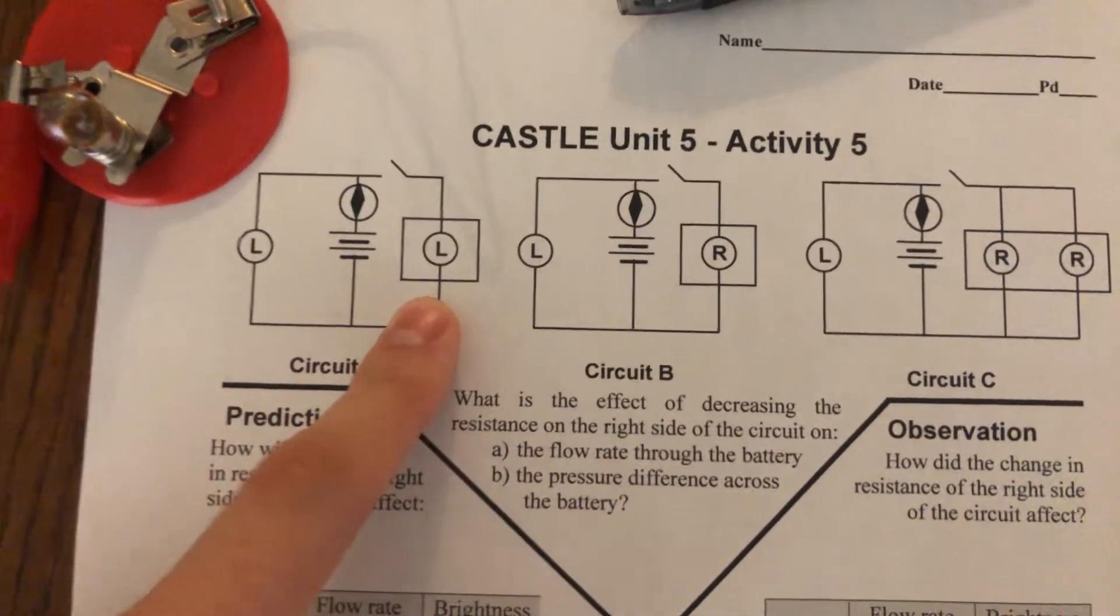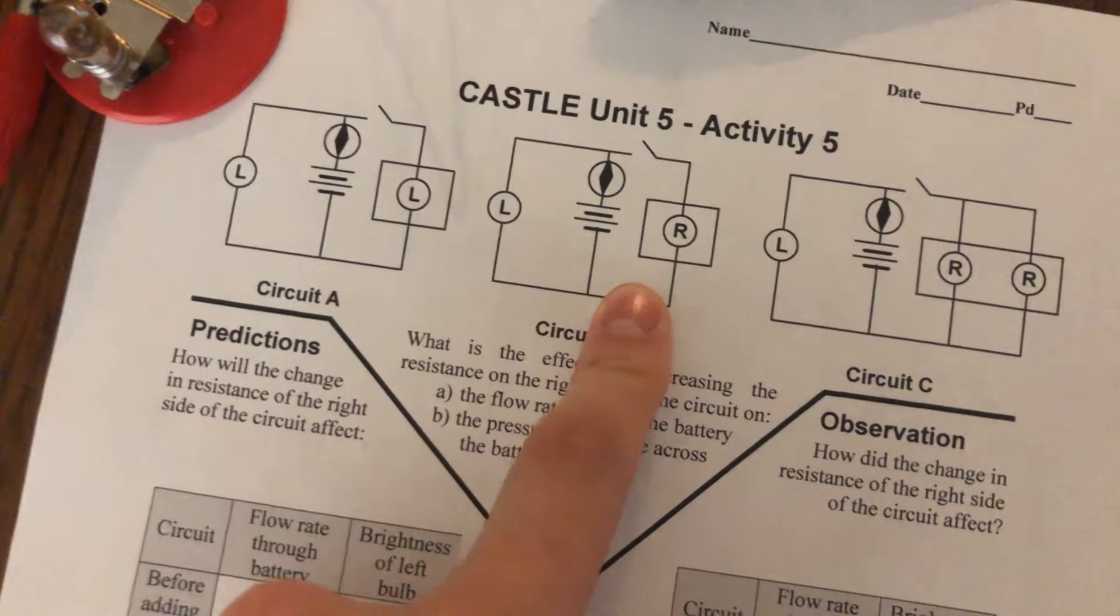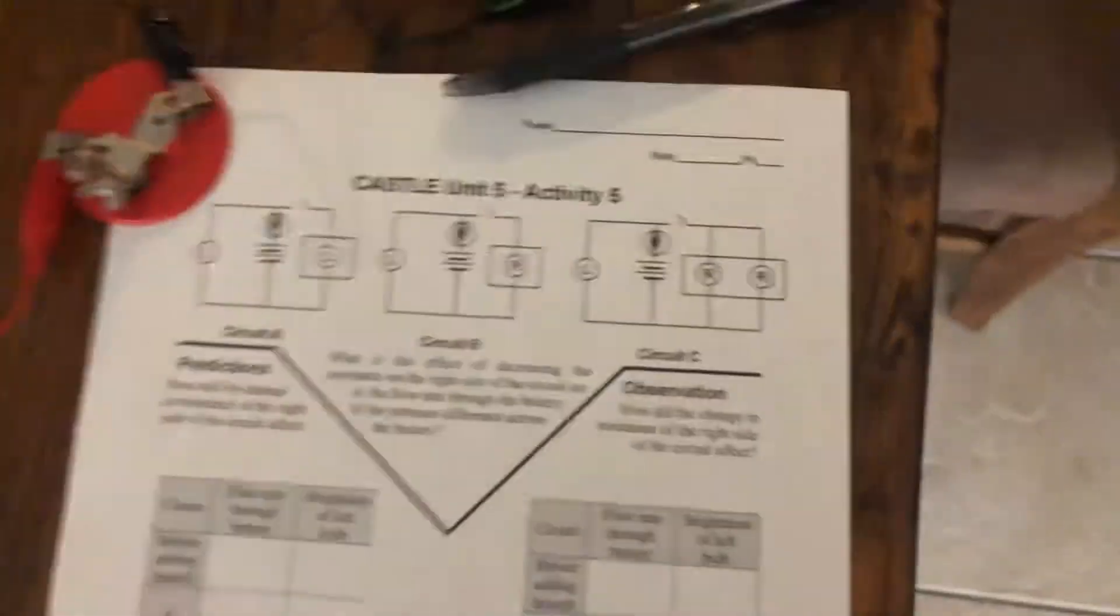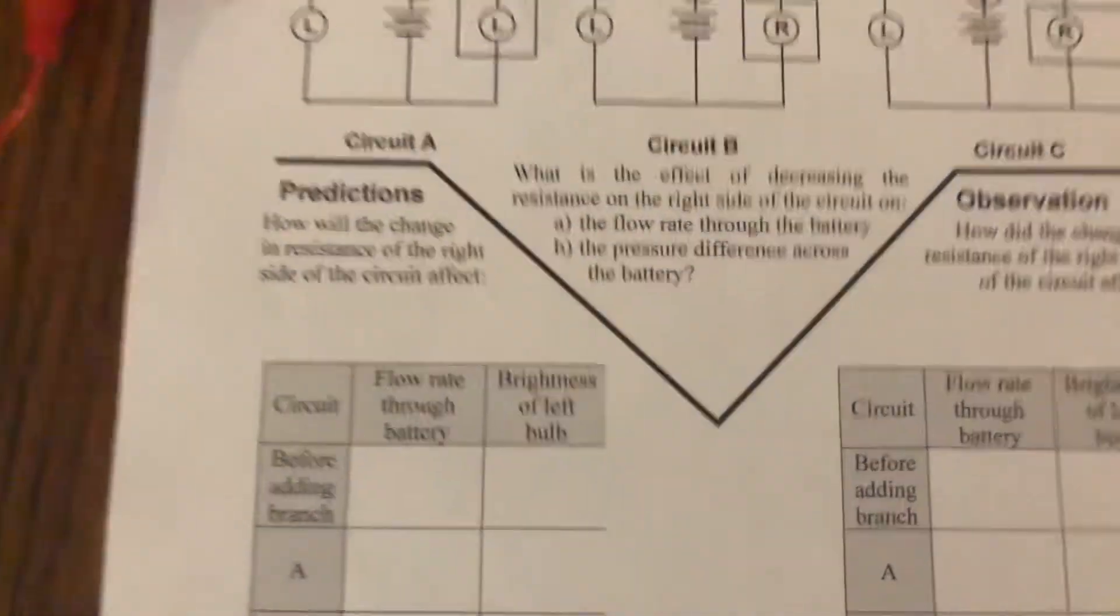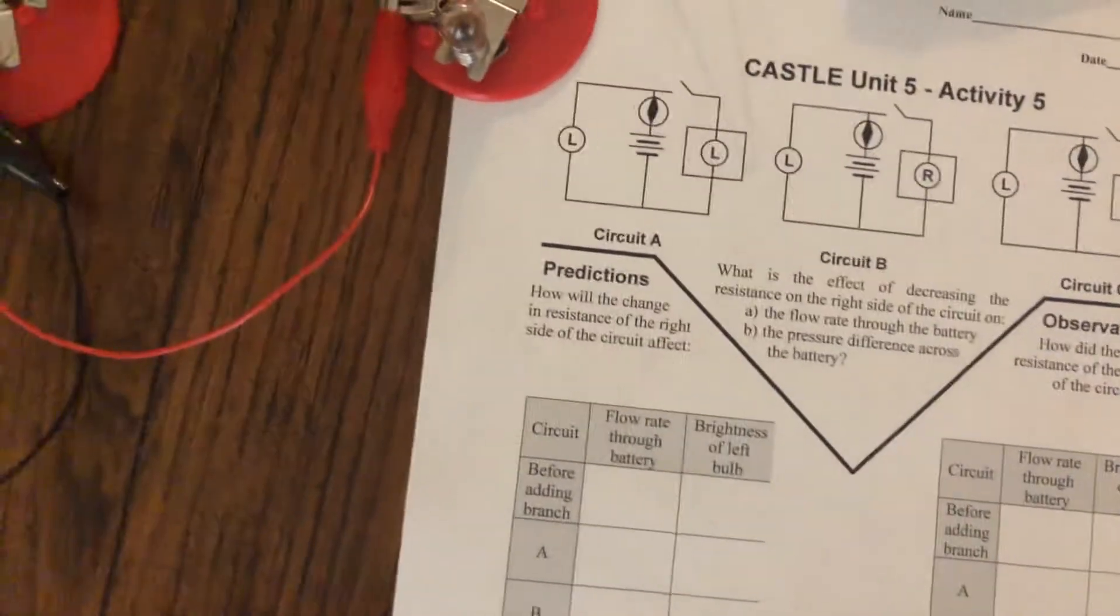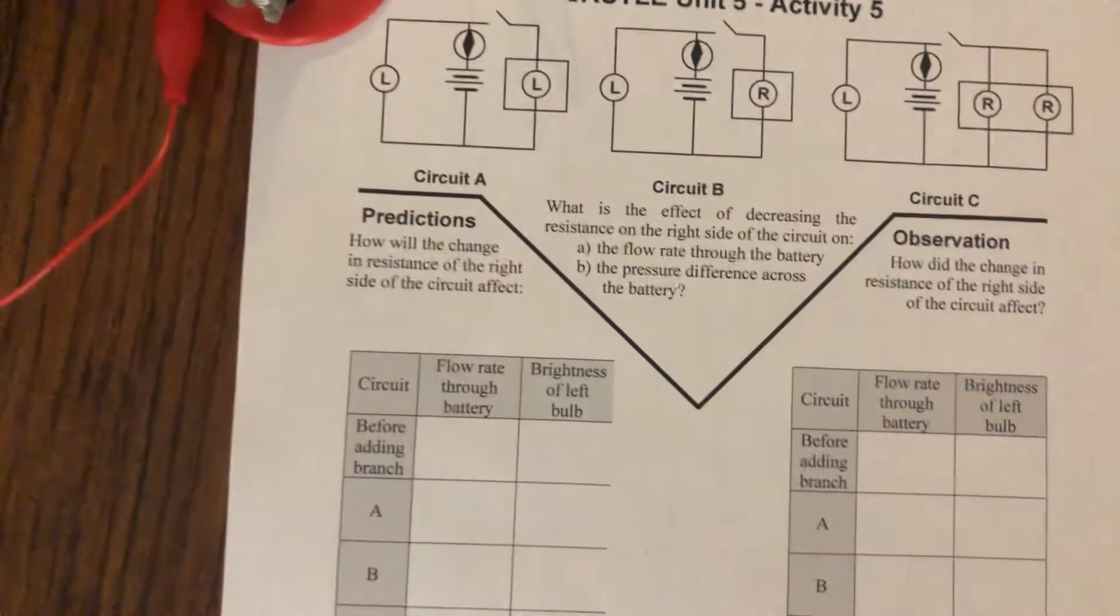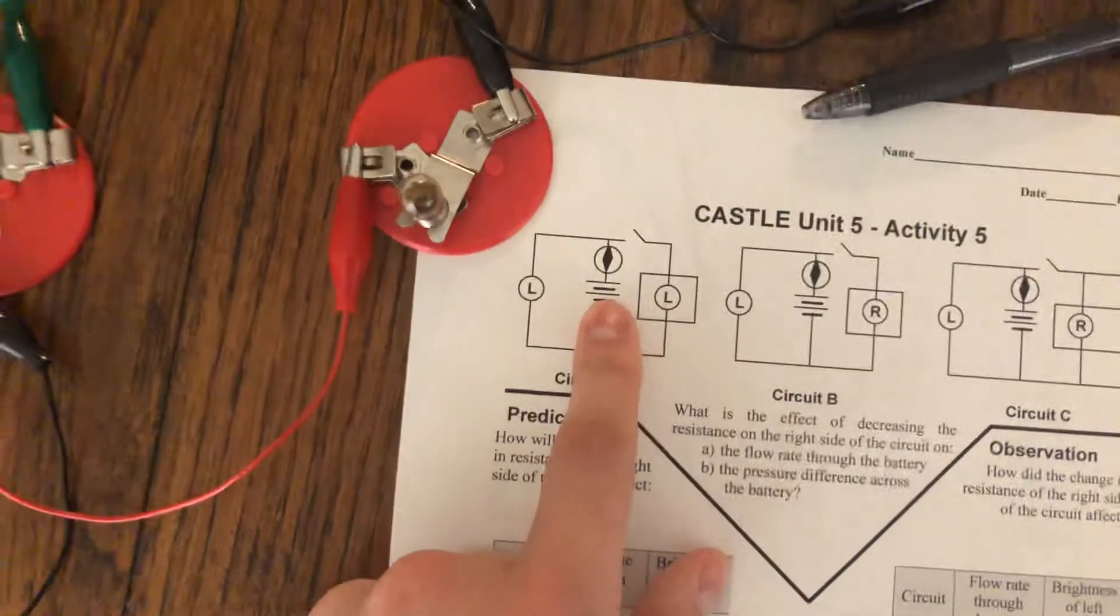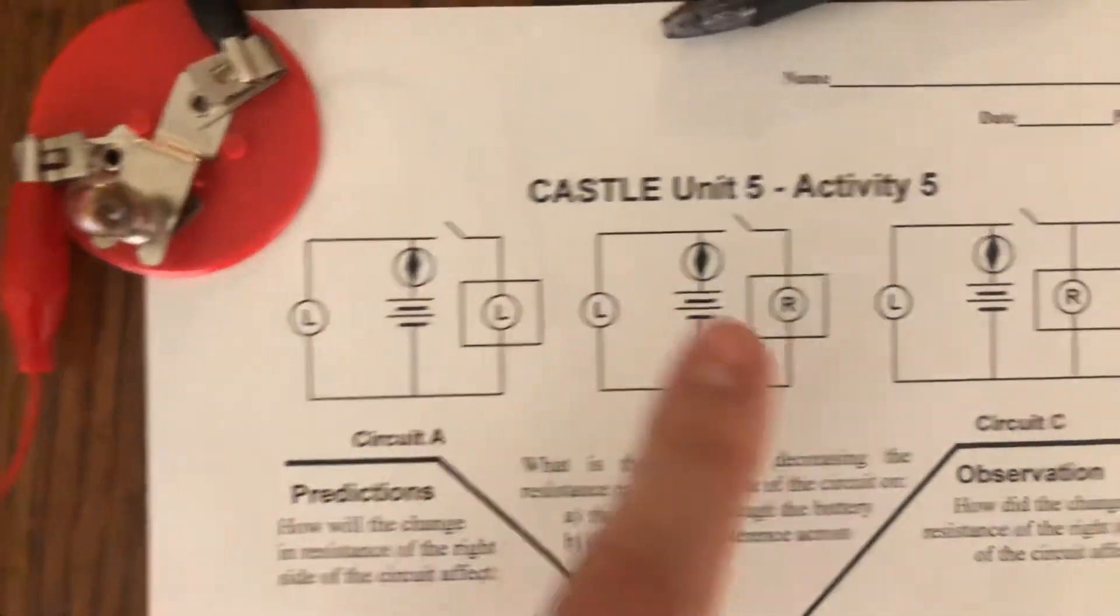Where we have on this side, we've got just a long bulb, and then a round bulb, which has less resistance than a long bulb. And then two round bulbs, which has even less resistance than that. And so what we're going to look at is, how does that change the flow rate through the battery? And I've got a compass set up. And also the brightness of the bulb on the left. The idea being that if this battery maintains a constant red to blue pressure difference, then the brightness of this bulb, that long bulb on the left side, should not change.